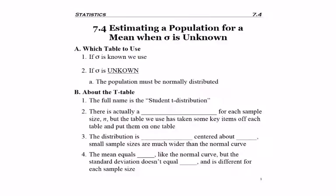So the first thing we have to consider is which table to use, because it turns out we're going to be using a new table. If sigma is known, we use the standard normal table, also referred to as the z-table.